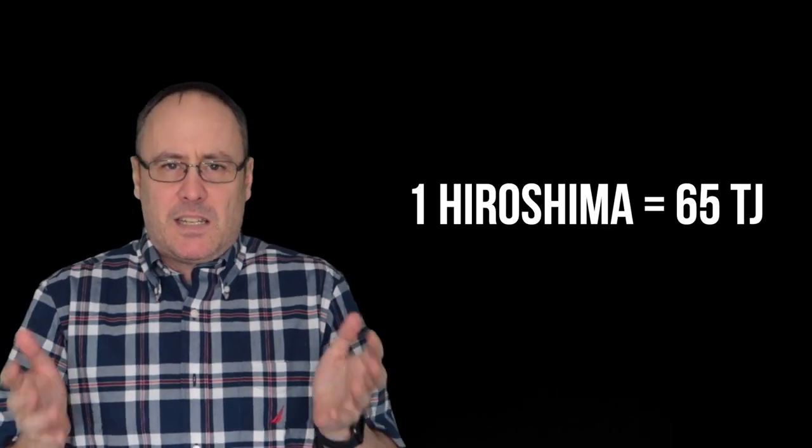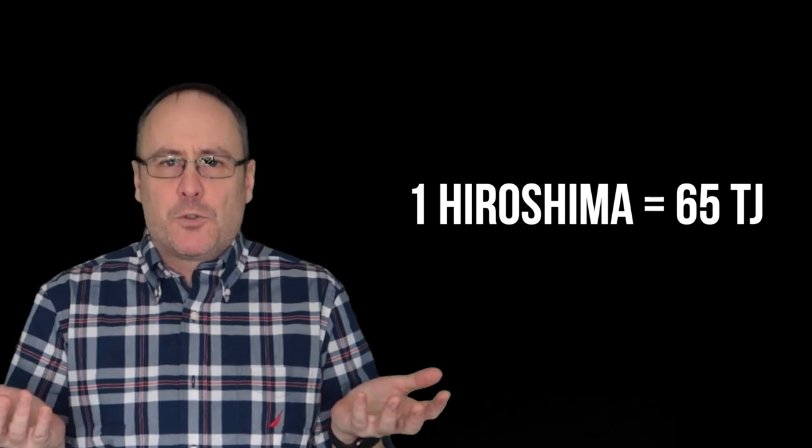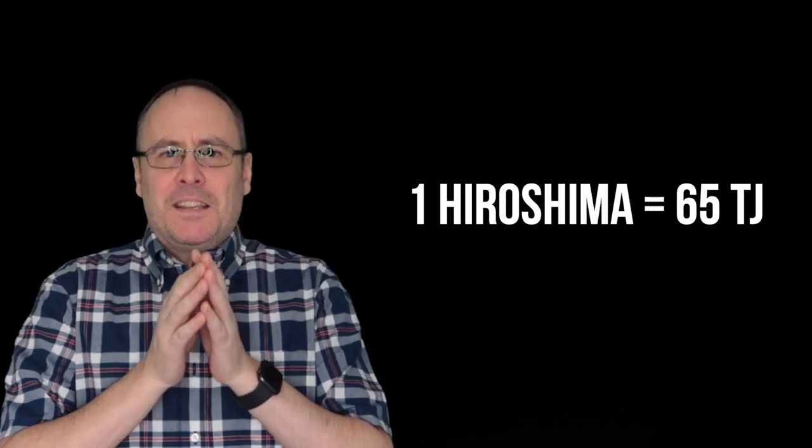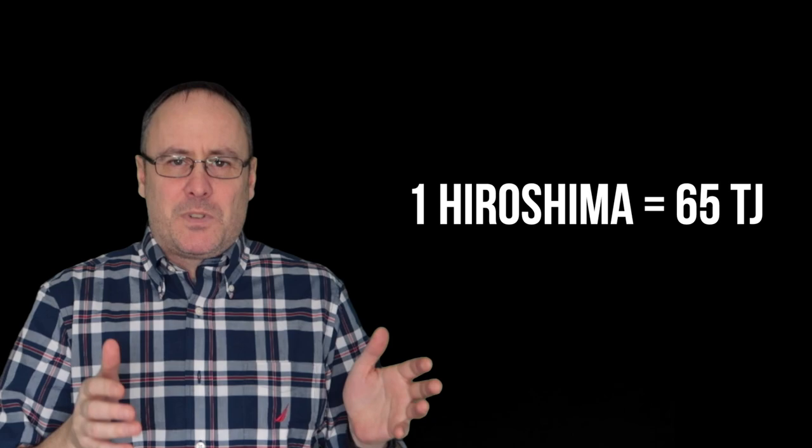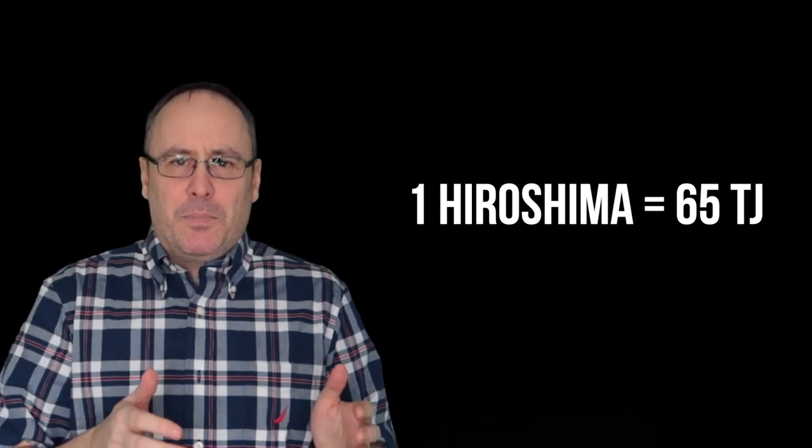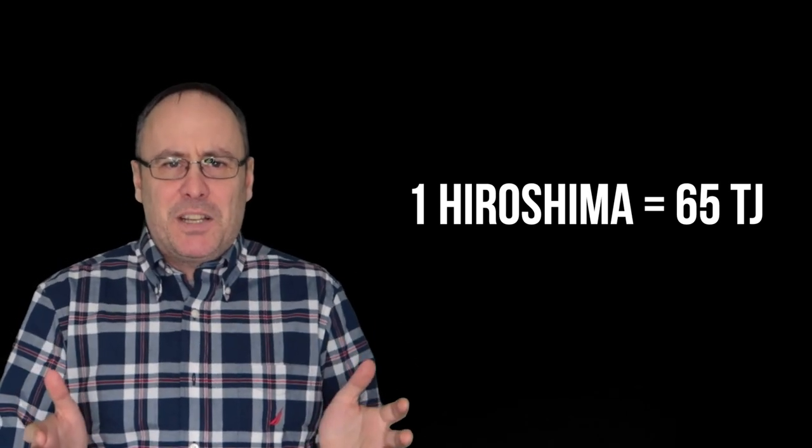Now, to put a precise figure on the energy in the Hiroshima bomb, we can say it's about 65 terajoules, give or take a small margin of plus or minus two terajoules. Uppercase TJ is terajoules. However, we're back to the problem: 65 terajoules means nothing to the average person.